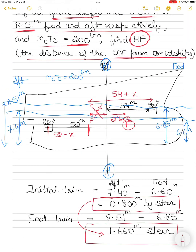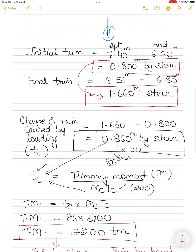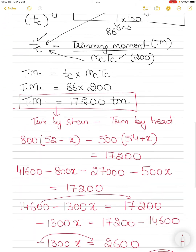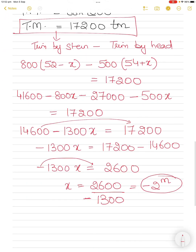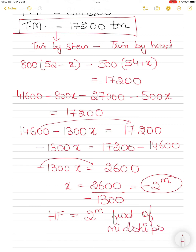So the center of rotation F is 2 meters forward of midships. Hence HF = 2 meters forward of midships. The magnitude stays the same; we just correct the direction because the answer came out negative.